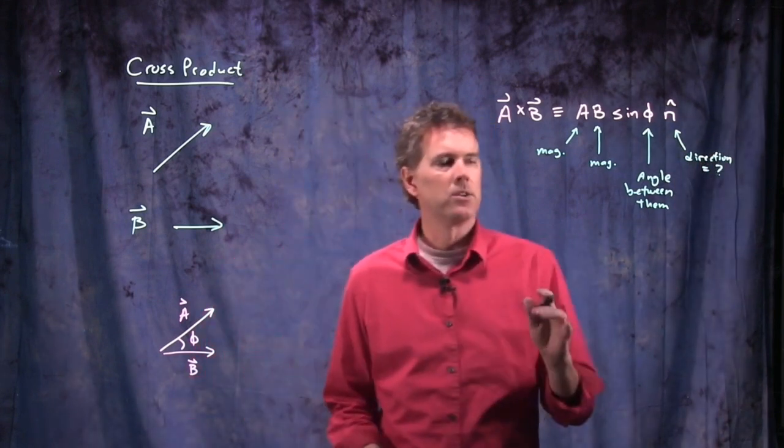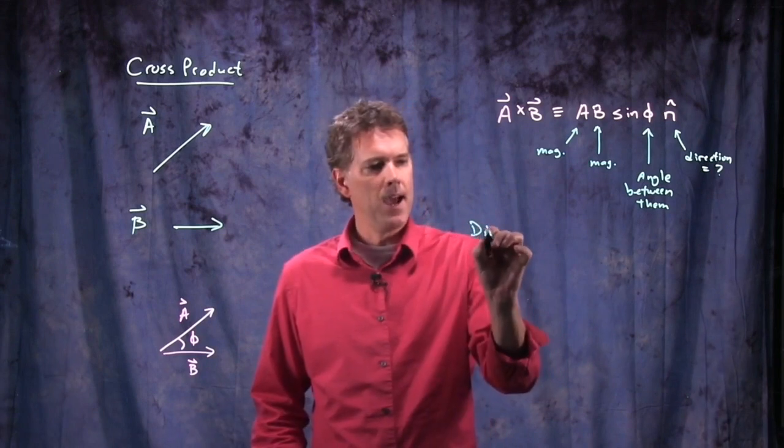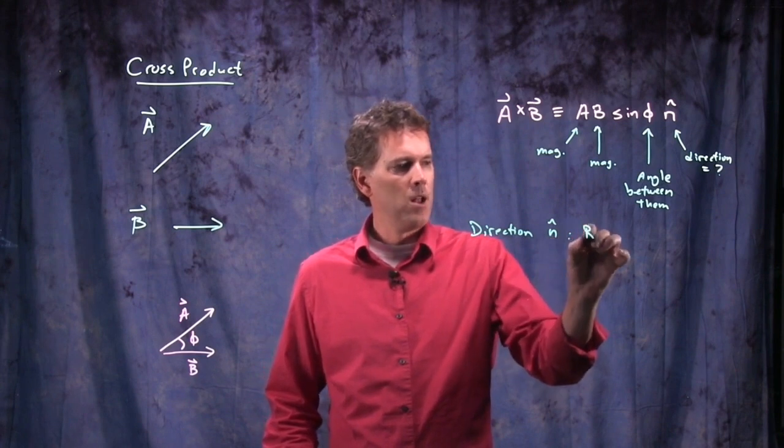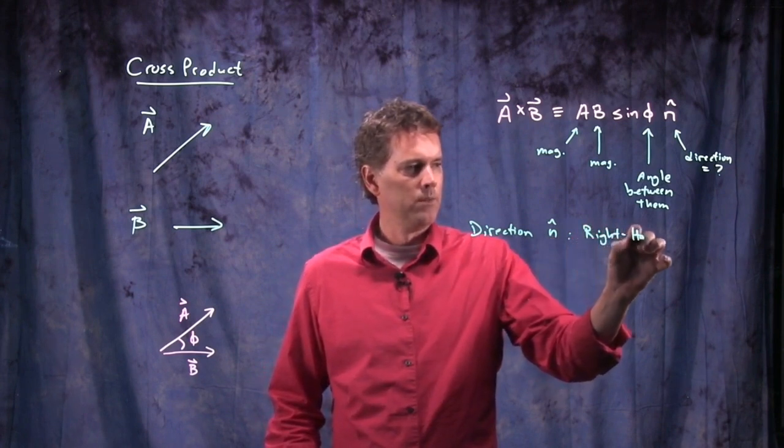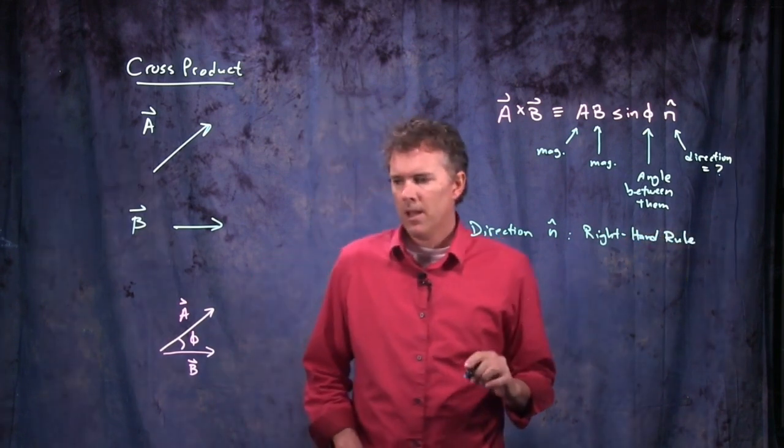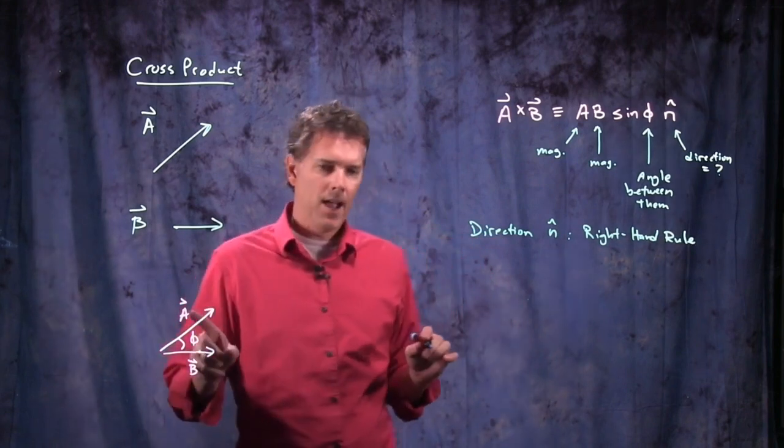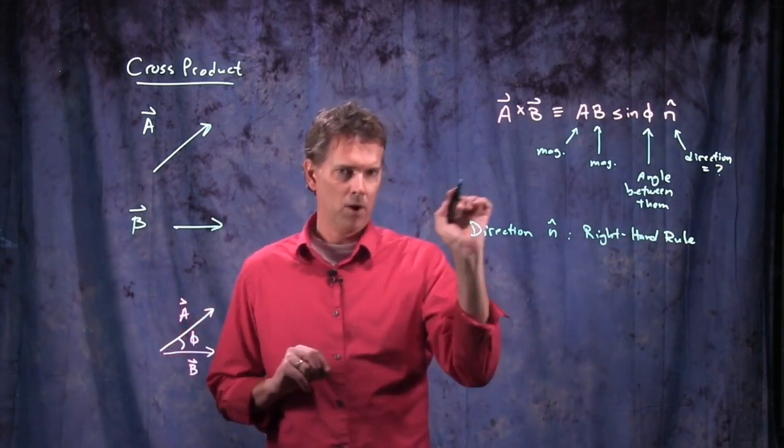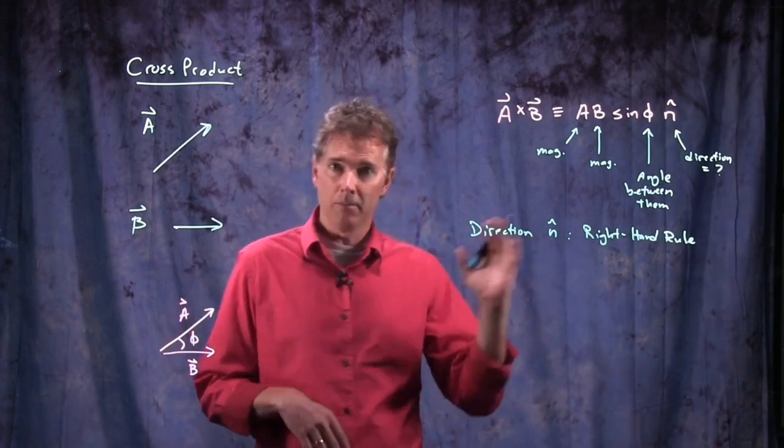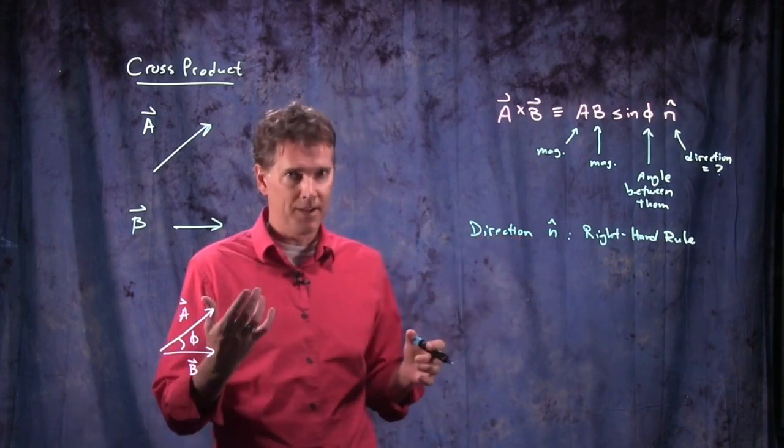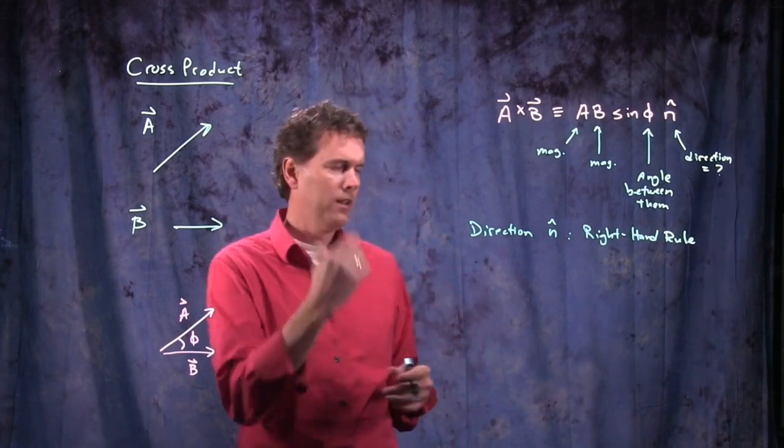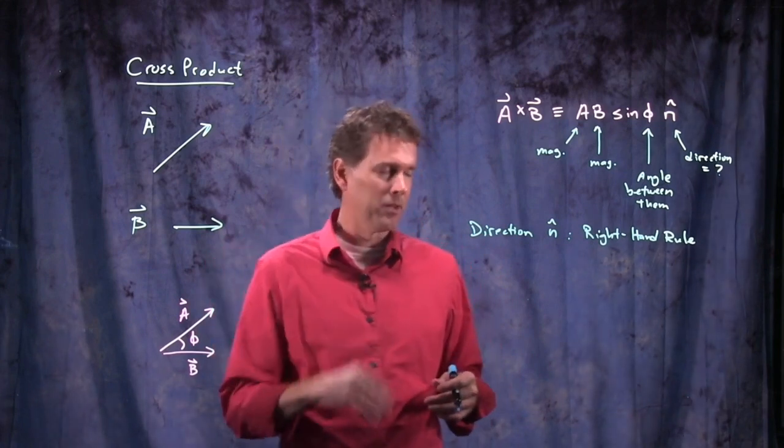So how do we figure out this direction? The direction n hat, we follow what's called the right-hand rule. If I have vector A and vector B, I can figure out the direction of the cross product if I'm very careful about following the right-hand rule. Now this is a little tricky with the learning glass, because my right hand is looking like left hand to you. So I, in fact, have to use my left hand. You'll notice that the ring is on this hand. So it's really my left hand, even though it looks like my right hand to you guys.